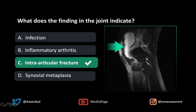Inflammatory arthritis would be a consideration, but we would expect synovitis, fluid, maybe filling defects, and possibly erosions in the bone — not a frank fracture with a lipohemarthrosis showing two different densities within the joint. Synovial metaplasia like PVNS or synovial osteochondromatosis doesn't present with these findings, and we certainly would not have a lipohemarthrosis in the case of synovial metaplasia. So the best answer is intraarticular fracture.